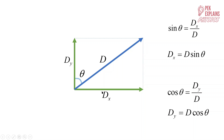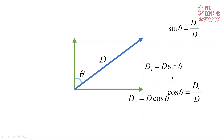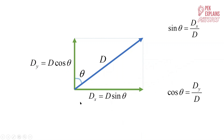So here are the X and Y components of vector D for the second situation. The formula to calculate the components: for the X component, since the angle is with the Y component, DX is D sine theta — no angle uses D sine theta. And DY becomes D cosine theta since theta is adjacent to the Y component.